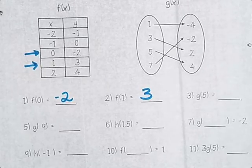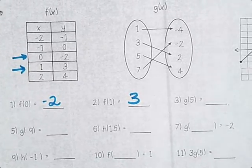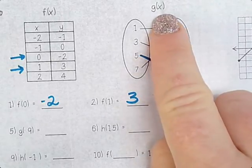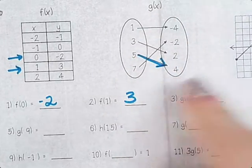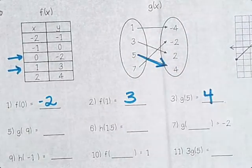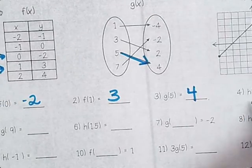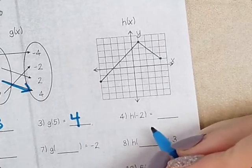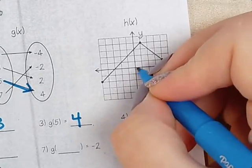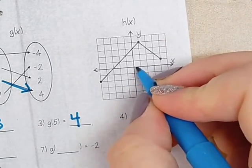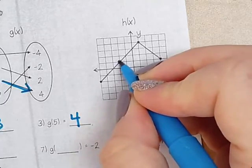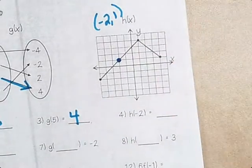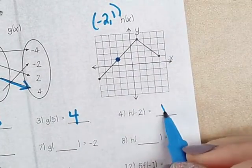g(5). Yep. So on the g function, 5 matches with 4. h(-2). So this is with the graph. Positive 1. So yeah, we go on the x-axis, go to negative 2, find where that function is. And that point is at (-2, 1). So that means it is 1.